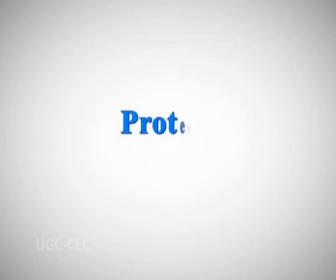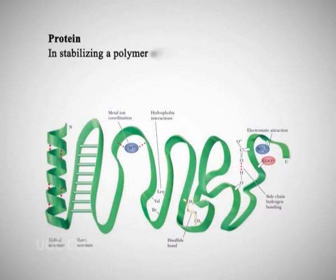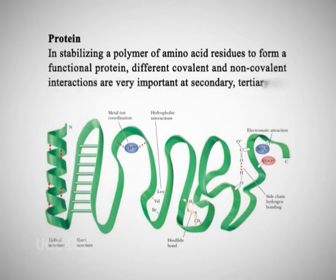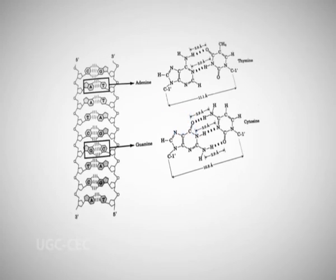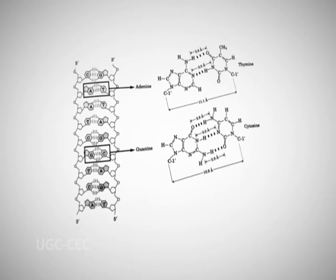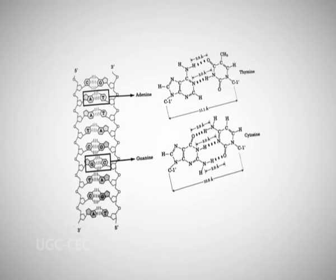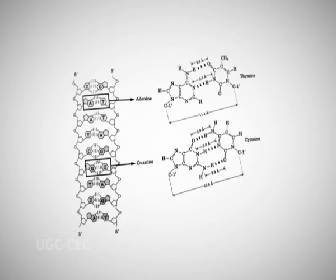Now, stabilization of macromolecules by different interactions. For proteins, different covalent and non-covalent interactions are very important at the secondary, tertiary, and quaternary structural levels in stabilizing a polymer of amino acid residues to form a functional protein. For DNA, the double helical structure is stabilized by hydrogen bonds and hydrophobic interactions. The existence of specific base-pairing hydrogen bond interactions was discovered in the course of studies leading to the determination of the three-dimensional structure of DNA by Watson and Crick. Moreover, hydrophobic effects from base stacking, resulting in the exposure of the more polar surfaces to the surrounding water, are also important in stabilizing the double helix.